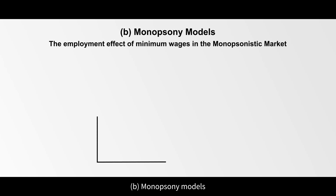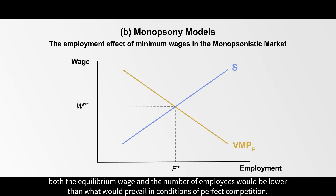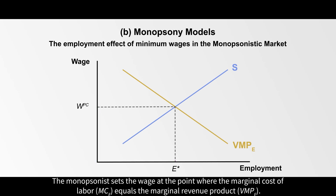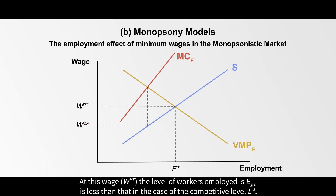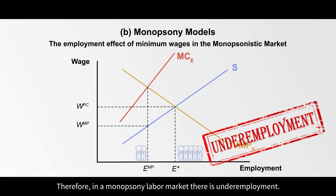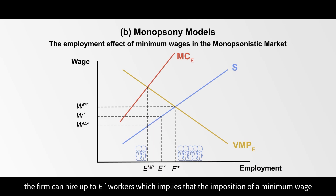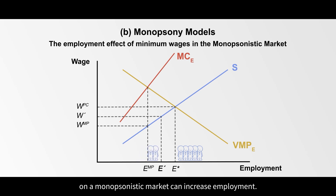In a monopsony situation, in the absence of a minimum wage, both the equilibrium wage and the number of employees would be lower than what would prevail in conditions of perfect competition. The monopsony sets the wage at the point where the marginal cost of labor equals the marginal revenue product. At this wage, the level of workers employed, EMP, is less than that in the case of the competitive level E*. Therefore, in a monopsony labor market, there is underemployment. In that sense, if the government imposes a wage floor of W', the firm can hire up to E' workers, which implies that the imposition of a minimum wage on a monopsony market can increase employment.